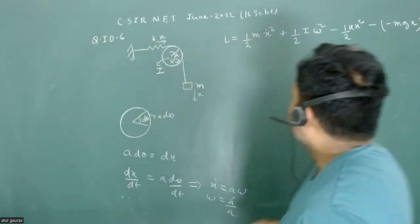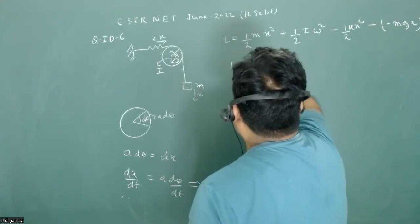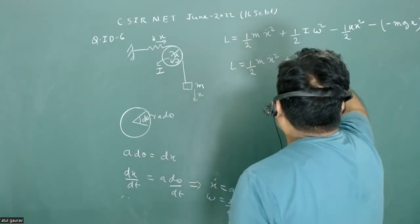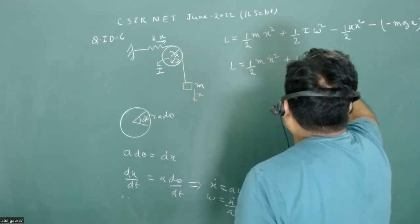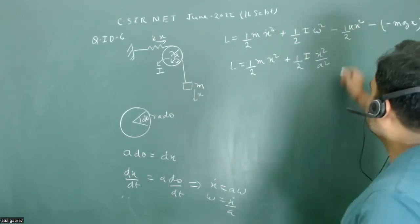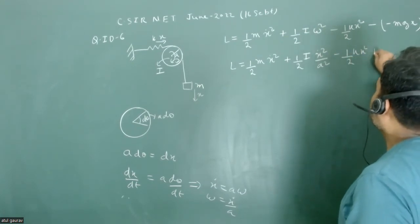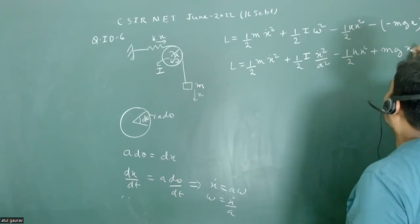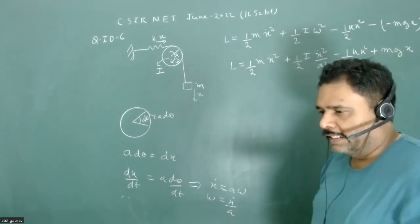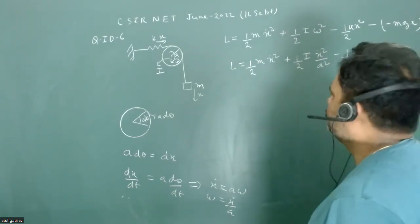Substituting omega = x-dot / a into the Lagrangian: L = (1/2) m x-dot² + (1/2) I x-dot² / a² − (1/2) k x² + mg x. Any extra constant distances in the gravitational term can be absorbed into the reference level and set to zero.